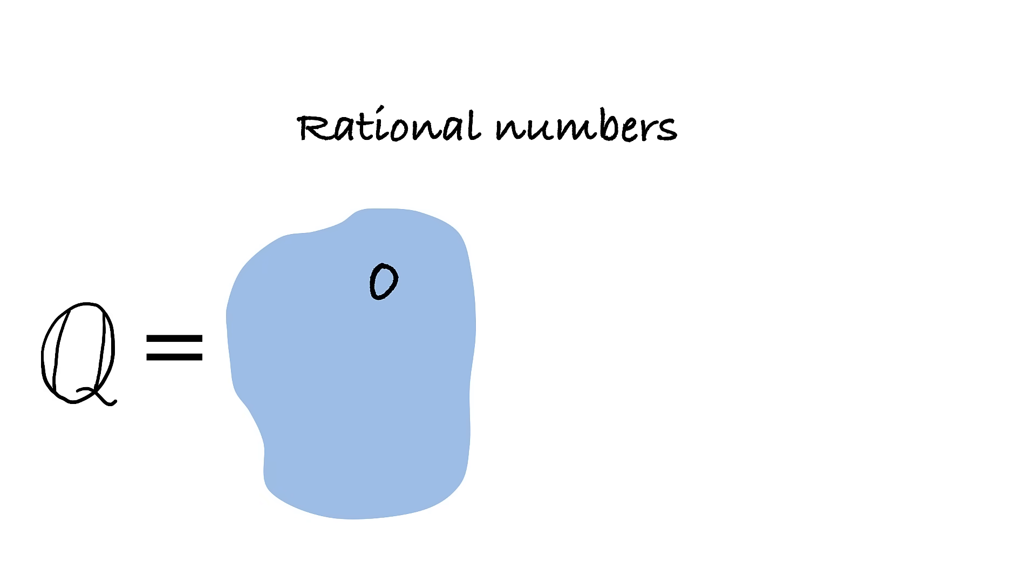But first, let's talk about numbers. If we only consider equations with rational numbers as coefficients, the roots will quickly get us outside of this basic set. So the roots of a simple equation x squared minus 2 equals 0 are irrational numbers square root of 2 and minus square root of 2.